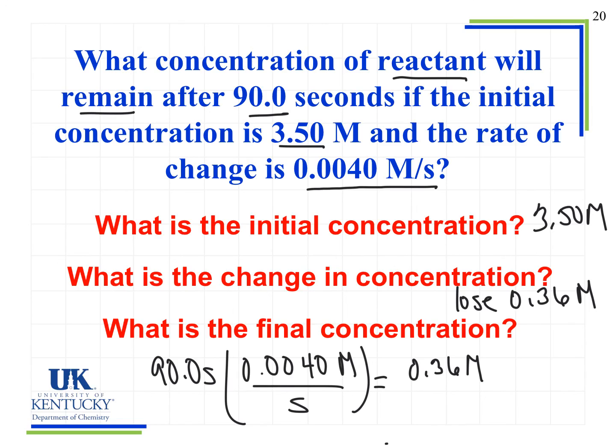And now I can figure out what the final concentration is, because I can say 3.50 minus 0.36 molar, we said that's how much we were losing, is 3.14 molar. So our final concentration is 3.14 molar. And this seems reasonable. One, we expect the concentration to go down, so we know we're going to subtract. We see that the rate of change, 0.0040 molar per second, is pretty slow. We're going 90 seconds. So we're not losing a ton. And we can see it goes down by a small amount.